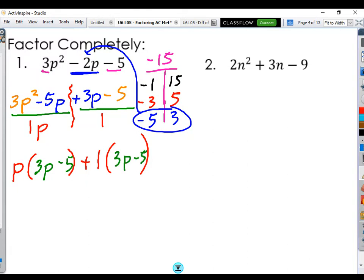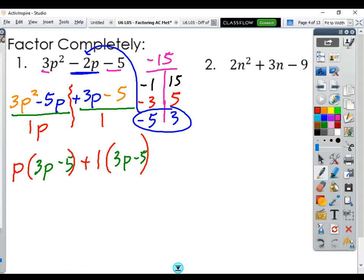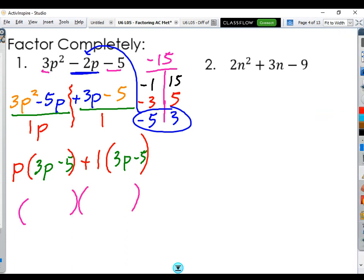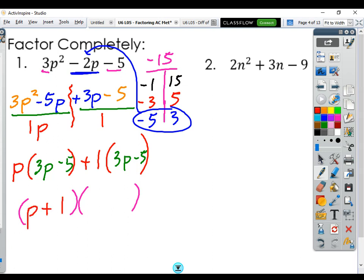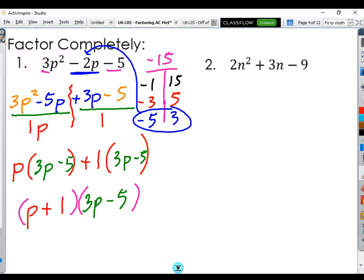Our binomials are the same, which is exactly what we want. And so we can create our new answer. Remember our new answer are the GCFs first. So p plus 1. Those are my two GCFs. Everything's color-coded here. So be careful. Watch. Check for the color-coding. P plus 1. And then the repeat binomial, 3p minus 5. There we go.